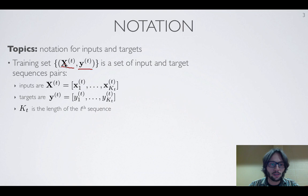Notice that Y is now in bold because it's a vector, and X^(t) is the sequence of vectors x_1^(t) up to x_{K_t}^(t). Here, K_t is the length of the t-th sequence in the training set.